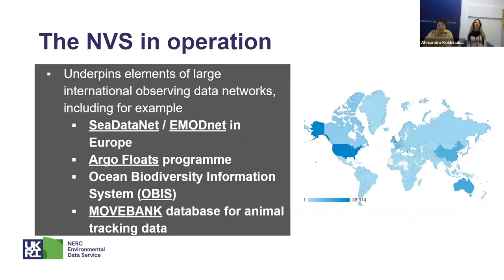The NVS underpins elements of large international observing data networks, including CDataNet and EMODnet data infrastructure in Europe. This infrastructure is a distributed marine data infrastructure for the management of data derived from in-situ measurements in seas and oceans by a pan-European network of marine data centres. Recently, the Argo Float Programme adopted the NVS to host its collections of controlled vocabularies. Argo is an important international programme that has deployed some 4,000 robotic floats over the last two decades to measure water properties across the world ocean.